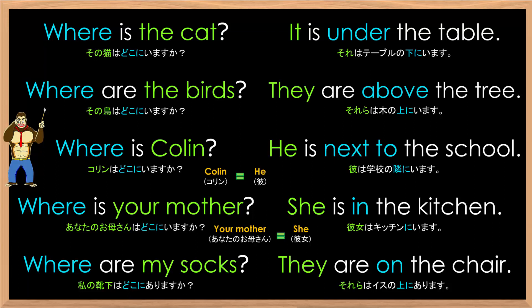Okay, you read the sentences next. Where is the cat? It is under the table. Where are the birds? They are above the tree. Where is Colin? He is next to the school. Where is your mother? She is in the kitchen. Where are my socks? They are on the chair.